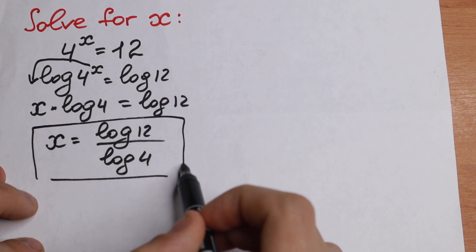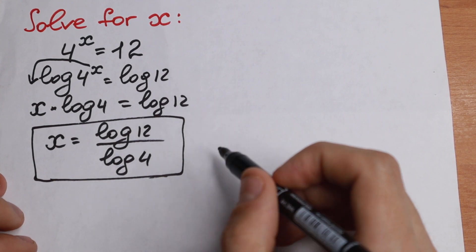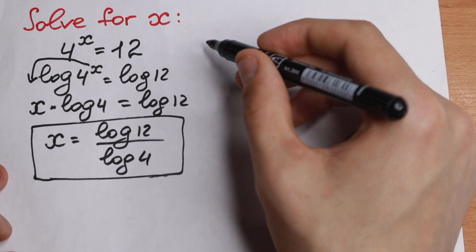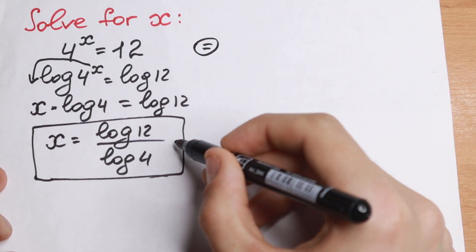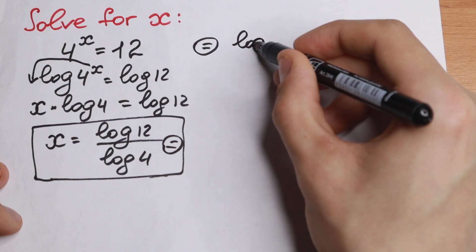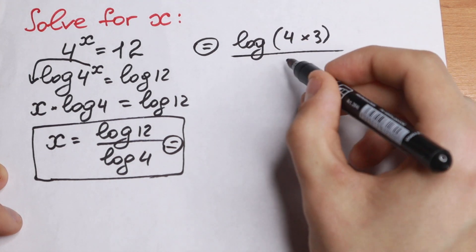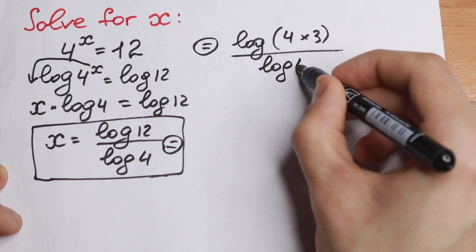But right now we are going to remember and learn more logarithm rules. The first really good rule we can remember is the next one. So let's simplify this. Let's write 12 as 4 times 3.